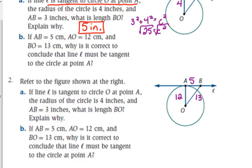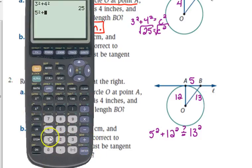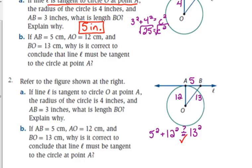If line L is tangent, then there's a right angle formed there. If there's a right angle formed there, then those measurements should fit the Pythagorean theorem. Let's see if they do. Let's plug them in. Five squared plus 12 squared. We want to know, is that equal to 13 squared? A little question mark over my equal sign, because I don't know for sure or not. I'm going to test it. Five squared plus 12 squared is 169. And guess what? That's what 13 squared is. So they are equal to each other. So it is correct to conclude that line L is tangent to the circle at point A, because the measurements satisfy the Pythagorean theorem.